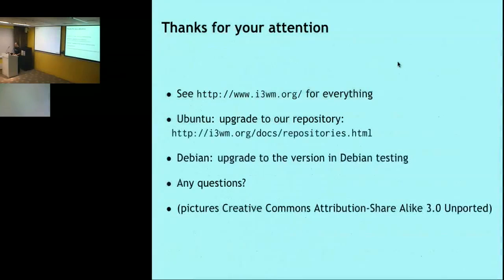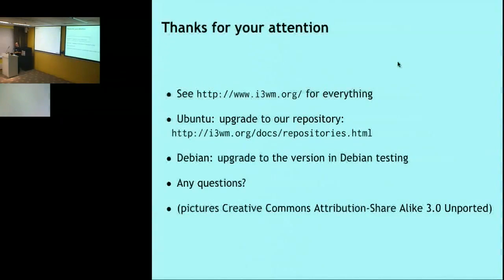If you're interested, go to i3wm.org for everything — links to distributions where it's available, documentation, developer documentation, and ways to reach us. If you're using Ubuntu, please upgrade to our repository, since the versions in Ubuntu are very old because they sync with Debian every six months. We provide a repository with stable versions for Ubuntu. If you're using Debian, just upgrade to Debian Testing. It's pretty well maintained. Thanks for your attention.